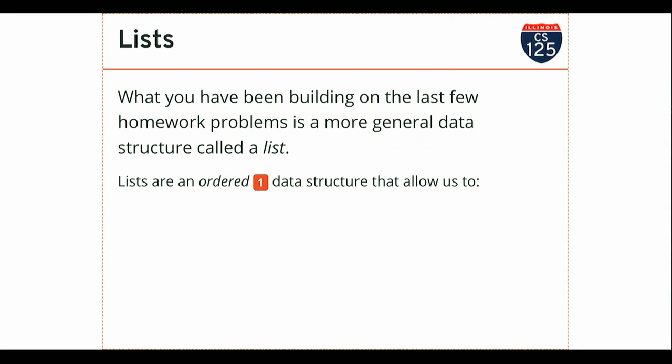So let's talk about lists. The last couple of homework problems, you guys have started to work with a list. A list is a general purpose data structure — you can think of it as a generalization of an array. Arrays were the first data structure we talked about, over a month ago. We said an array puts items in order — that's how it structures data. Every data structure adds metadata or structure to the underlying data. Once I put a bunch of objects into an array, I no longer have just an amorphous collection — I've now put them in order, added information: this one goes before that one.